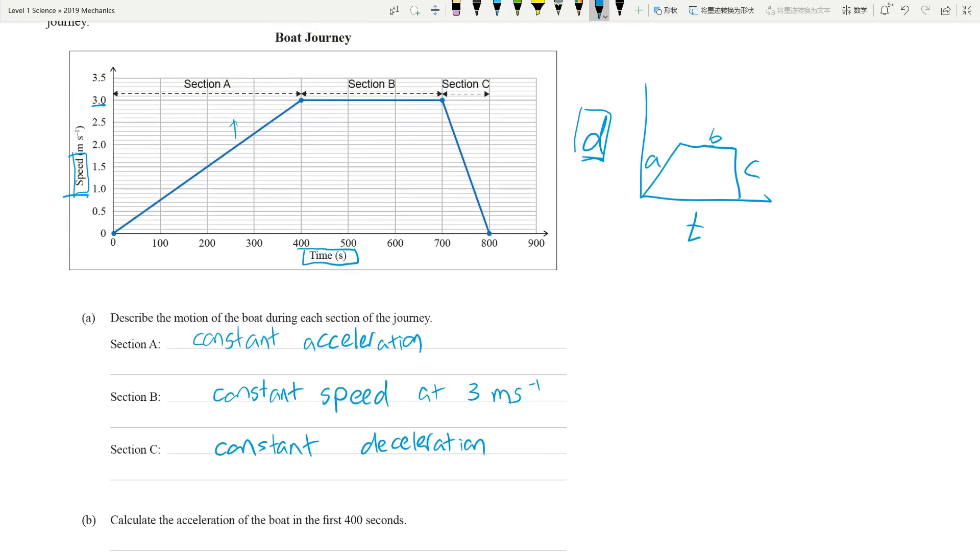Let's move on to the next one. Calculate the acceleration of the boat in the first 400 seconds. The examiner already told you the first 400 seconds is acceleration. So how do we calculate acceleration? You have a speed-time graph, so just remember the gradient of a speed-time graph is acceleration. How do we calculate the gradient? Gradient is calculated using rise over run.